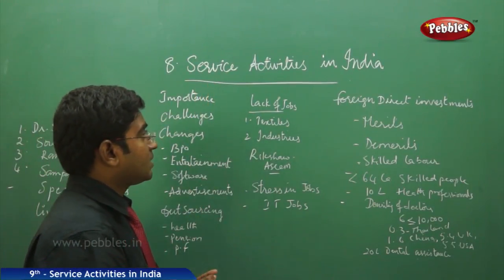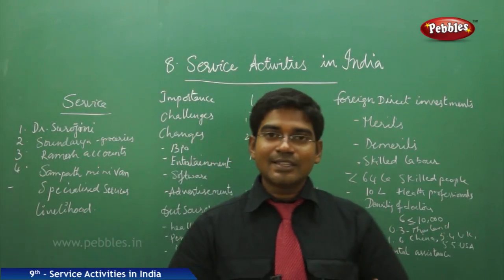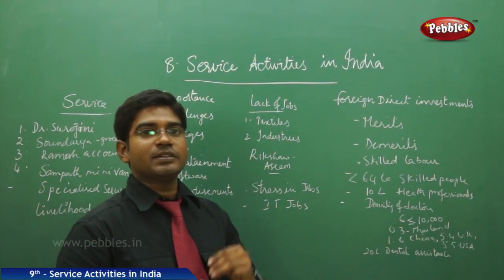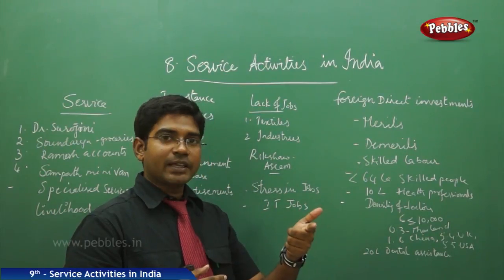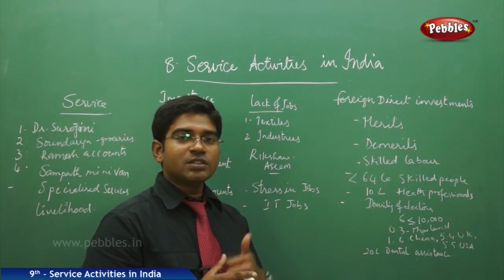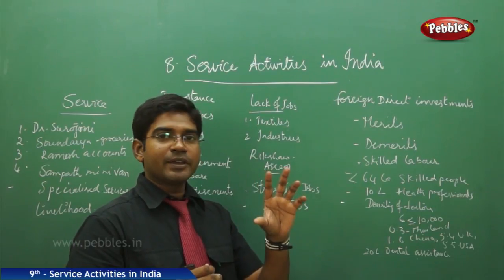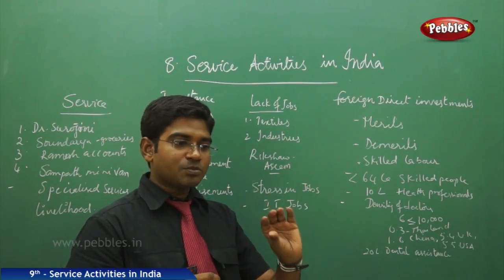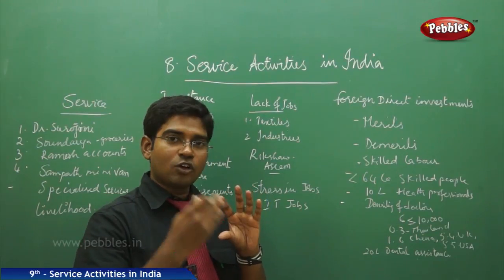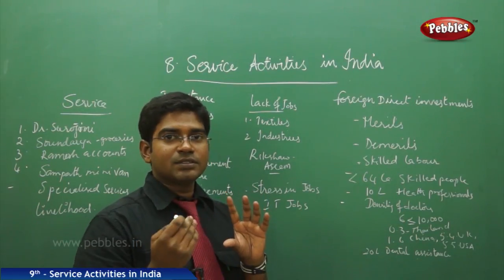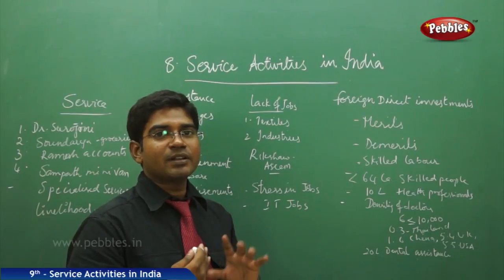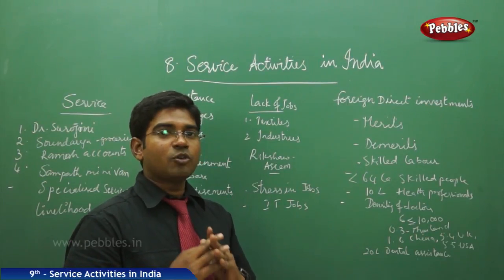Today's topic is service sector activities in India. The working style has been divided into three major categories: primary, secondary, and tertiary or service sector. People who depend on agriculture, fishing, and farming come under primary; those working in small or large scale industries come under secondary; and those working in hospitals, transport, communication, and software industries come under the service sector.